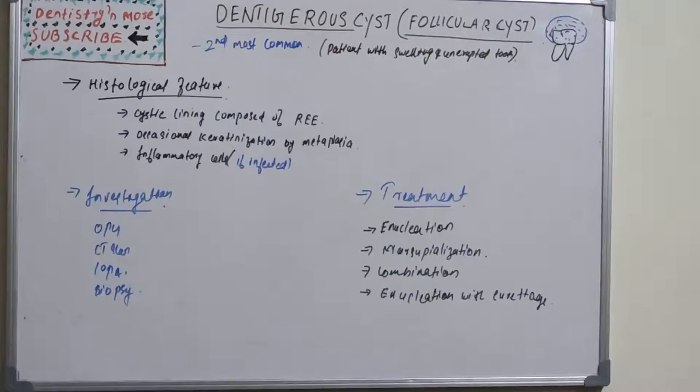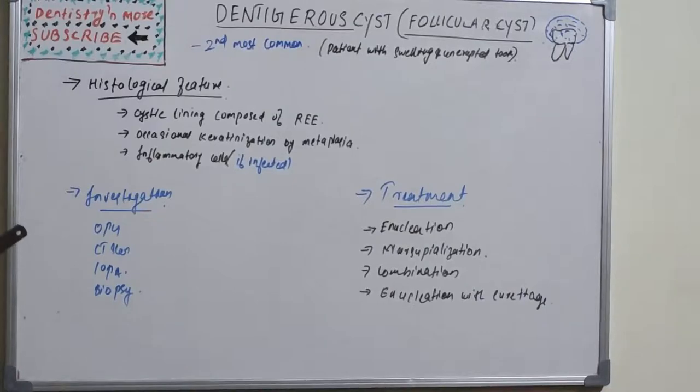In histologic features, there is a cystic lining composed of reduced enamel epithelium with occasional keratinization by metaplasia. Inflammatory cells, chronic inflammatory cells, will be there if it is infected. For investigation, we can use OPG and CT scan. IOPA can be taken and biopsy should be taken to get a clear picture.